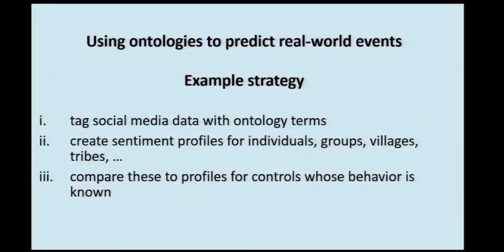We can take behaviour ontologies like the emotion ontology and use them to predict real-world events, in just the same way the gene ontology is used to predict chemical or biological events. The idea is that you collect a lot of data — for instance, Twitter data — tag it with ontology terms from the emotion ontology, use the tagged data to create sentiment profiles for individuals or groups, compare these profiles to those of groups whose behaviours you already understand, and then use the differences to find markers for groups likely to commit football hooliganism, terrorism, crime, mass suicide, or similar acts.